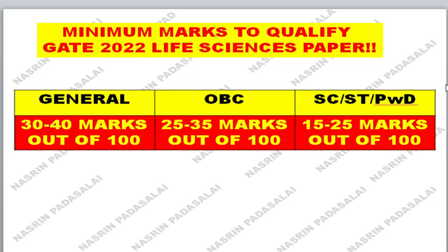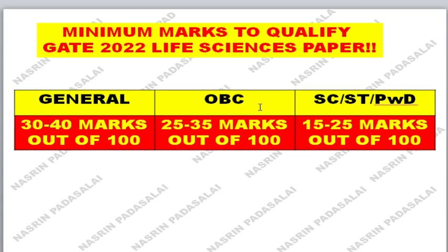I said the minimum marks to qualify the GATE Life Sciences paper are: if the question paper is easy, the cutoff will be around 30 out of 100; if the question paper is difficult, the cutoff will be around 40. I've also given figures for OBC as well as SC/ST and persons with disability categories.